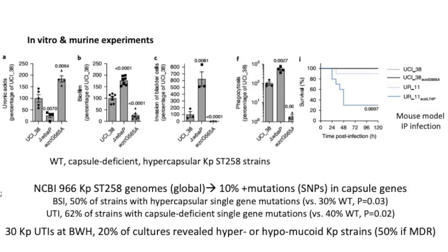Then they looked at phagocytosis by cells in vitro, and as expected, the hypercapsular strain was resistant to this host defense. Lastly, in the far right, they put the strains into a mouse model of KP infection. The blue bar shows that the mice died when they got the hypercapsular form, but in the top lines in light blue and black, the mice survived with the capsule-deficient and wild type strains. So they were able to identify clear differences in virulence amongst these capsule-deficient and hypercapsular forms.